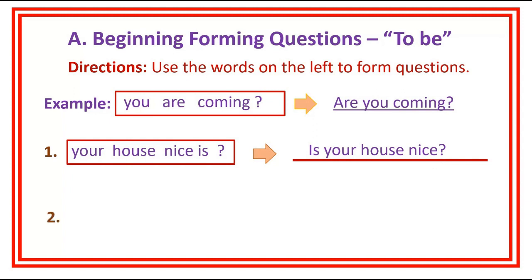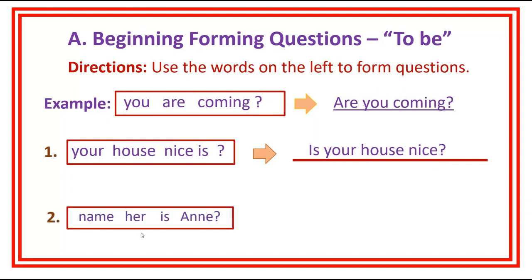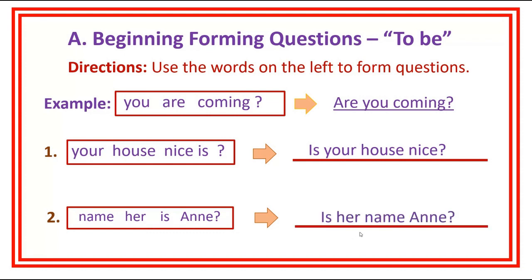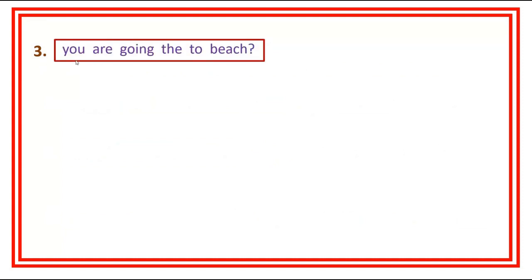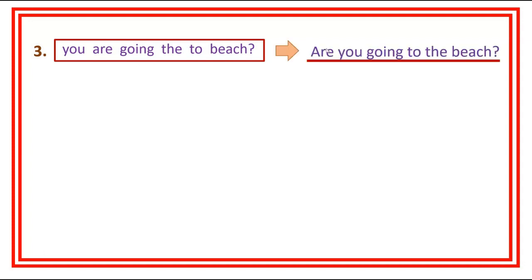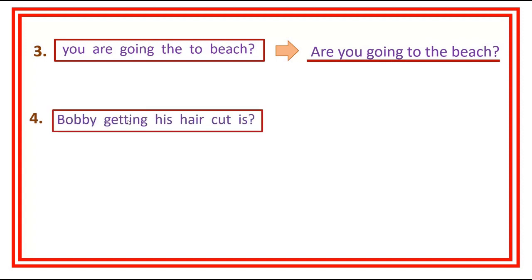Number two: name her is Ann — answer: is her name Ann? Number three: you are going to the beach — answer: are you going to the beach?